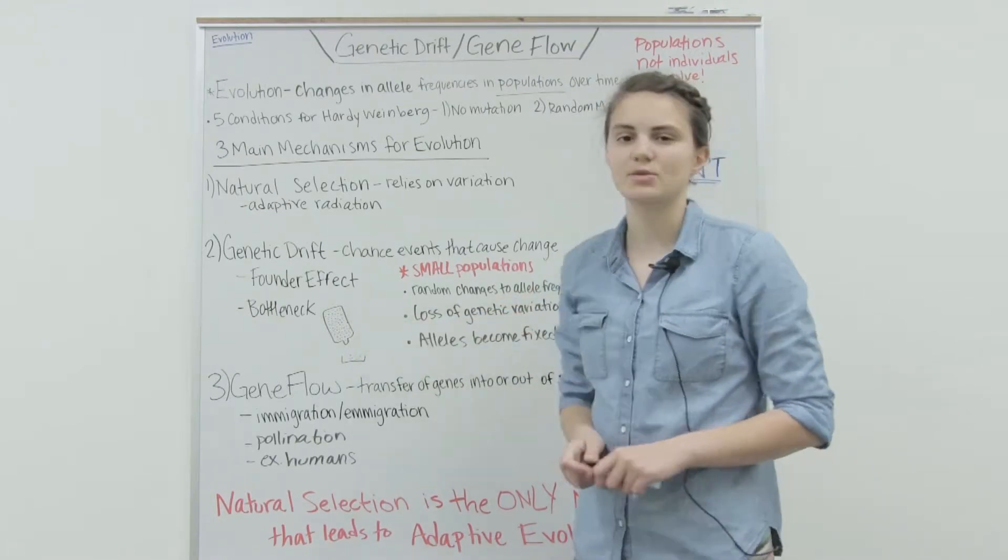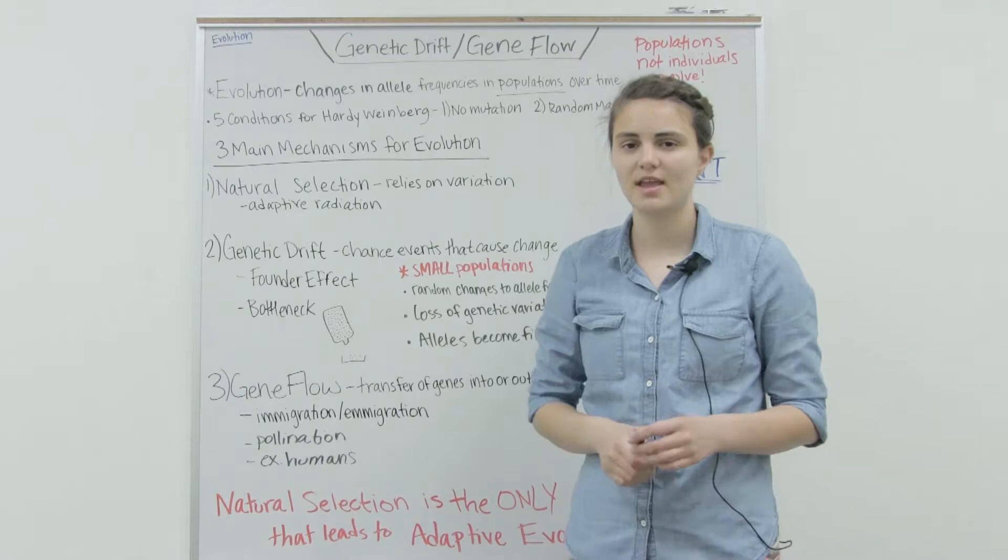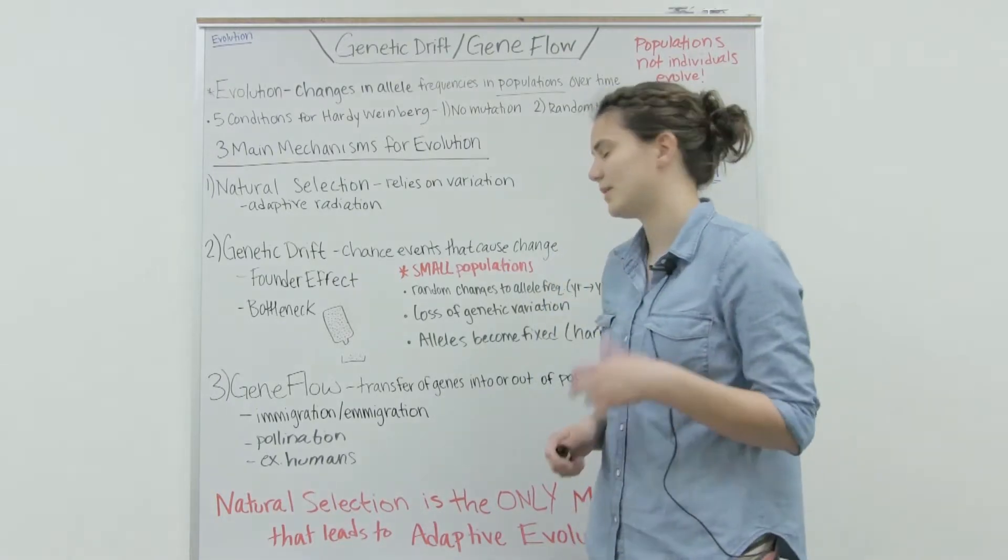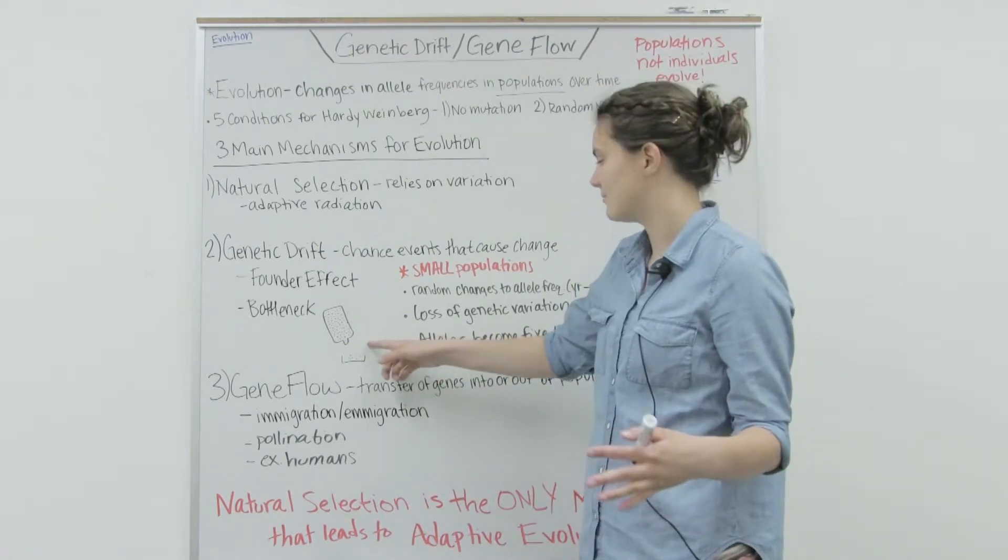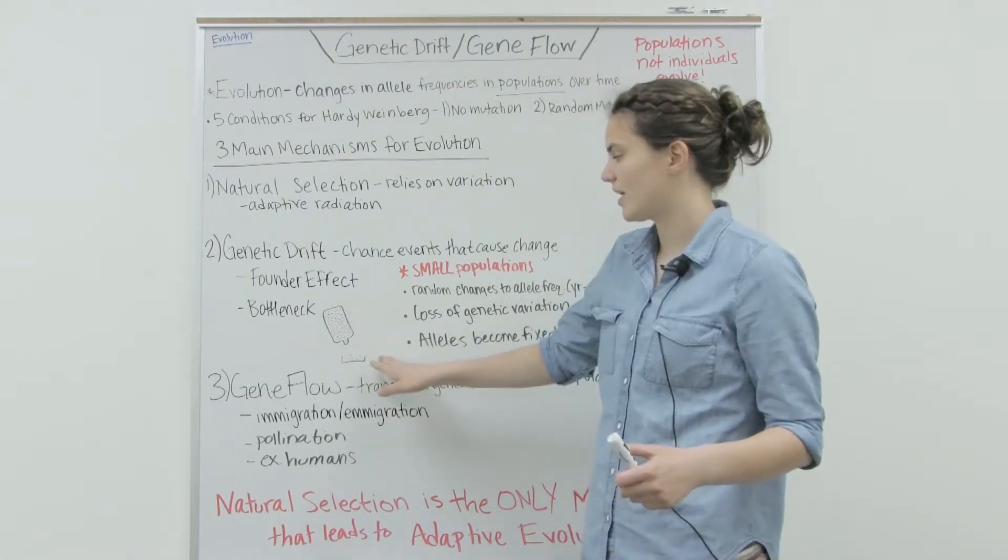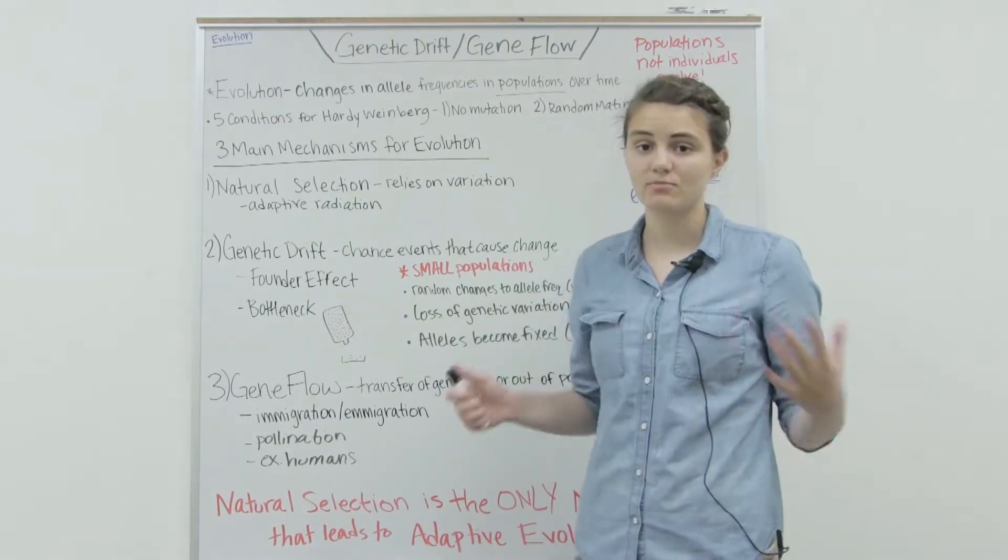This is a nice way to visualize it. If you have this bottle with all these different colored dots, the different colors represent different alleles - we have blue, black and red. Some chance event is causing them to be bottlenecked, so only a couple make it through the fire or the flood.